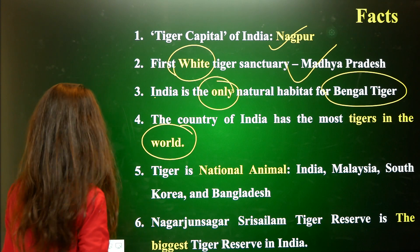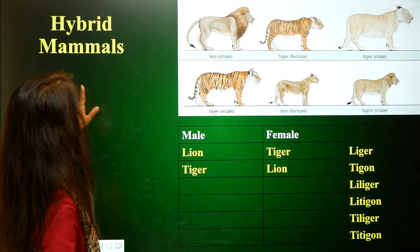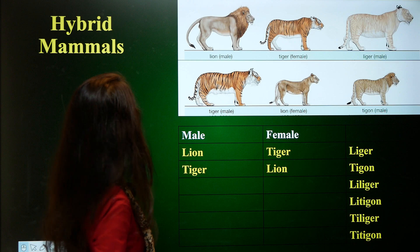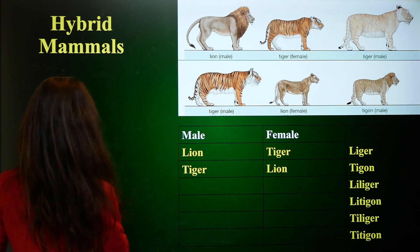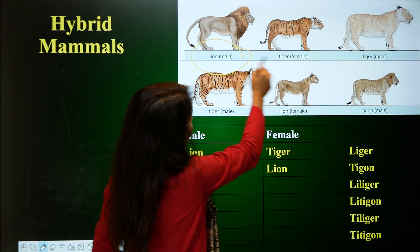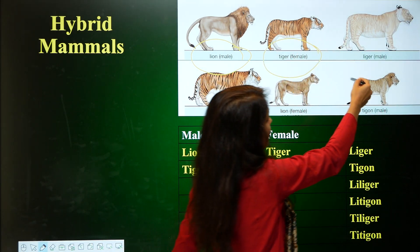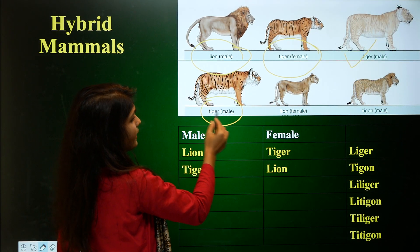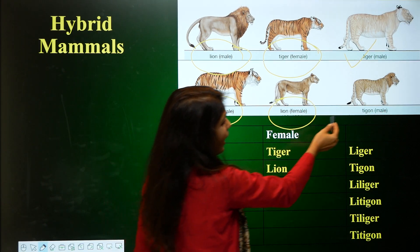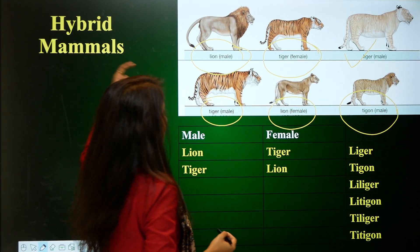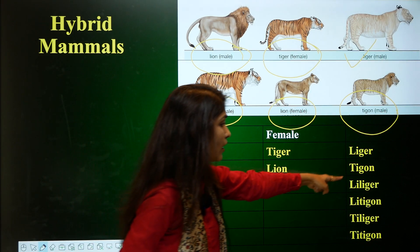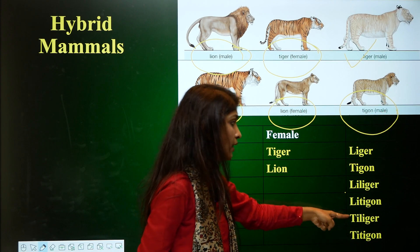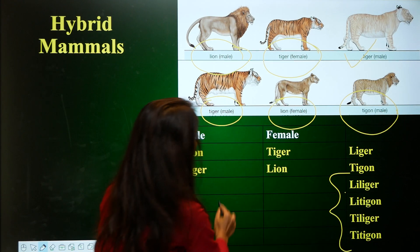An interesting fact about hybrid mammals: a male lion crossbred with a female tiger results in a liger; a male tiger crossbred with a female lion results in a tigon. There are other hybrid variants including Li-liger, Li-tigon, Ti-liger, and Ti-tigon — details can be explored as homework.